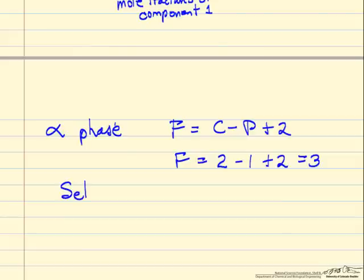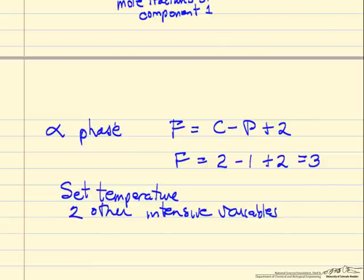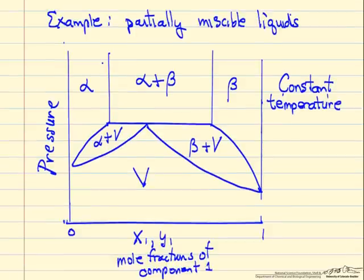Now in our diagram we've already set the temperature, so this diagram is for a given temperature. The diagram of course is going to be different at different temperatures, so we have two other intensive variables. So for example, pressure would be one of those. If we look at this, we could say at this pressure.